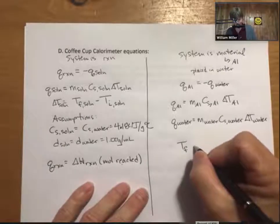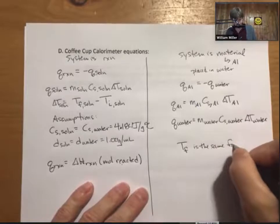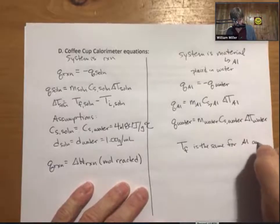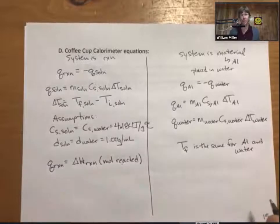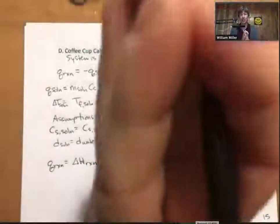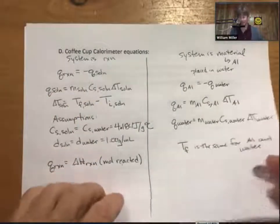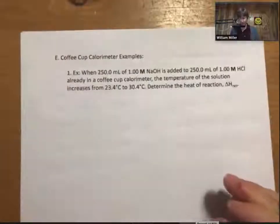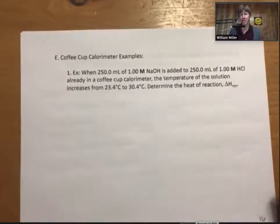And that in these types of problems, t-final is the same for the aluminum and the water because you'll be mixing them together, so t-final is the same for aluminum and water. You won't in fact have two separate t-finals, they'll both be the same, and that's what you'll be solving for, as I think we'll see. That seems like a good place to stop. We'll save the example.